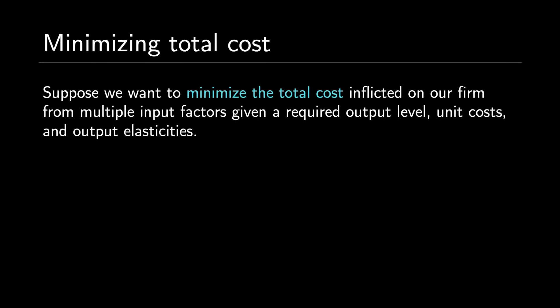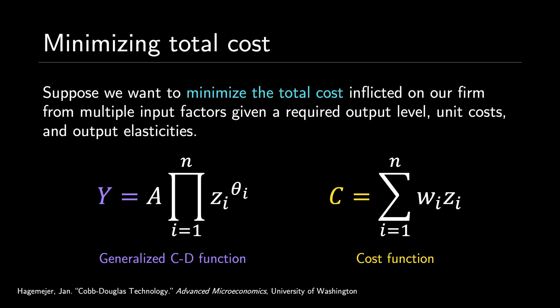Now let's do something much harder. Suppose we want to minimize the total cost inflicted on our firm from multiple factors — not just labor and capital — using the Cobb-Douglas function and information about unit costs and output elasticities. We can generalize the two-input production function to n inputs, such that y equals A times the product from i equals 1 to n of z sub i to the power of theta sub i, where z sub i is units of an input such as labor or capital, and theta sub i is the output elasticity of that input.